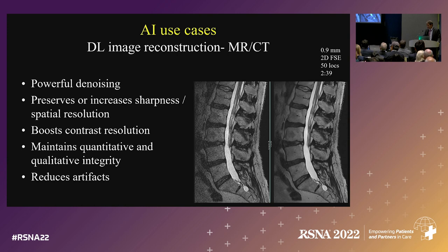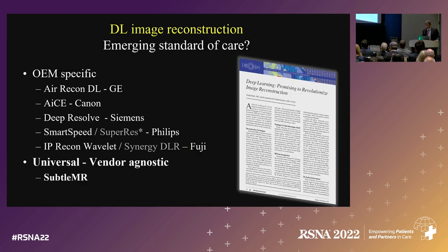At this point, we pretty much know what deep learning reconstruction can do. It is clearly an emerging standard of care. It provides very powerful denoising while preserving or increasing sharpness and spatial resolution. By improving the SNR, you improve the contrast resolution — all while maintaining the quantitative and qualitative integrity of the image. And every once in a while, you can reduce artifacts.